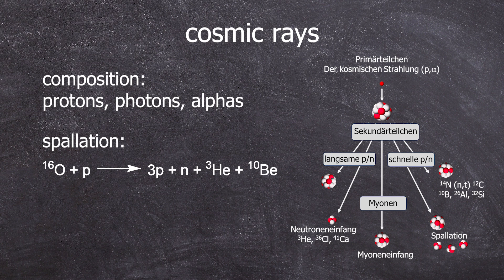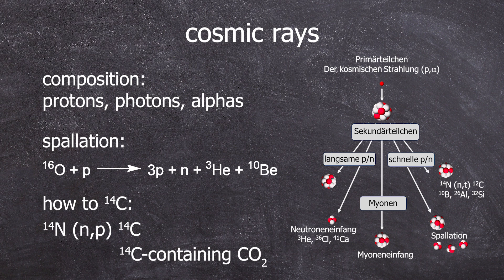...three protons, a neutron, a helium-3, and beryllium-10 to be formed. Just as an example, the reality is way more chaotic. This neutron can then, through an NP reaction with nitrogen, form carbon-14 out of the nitrogen.